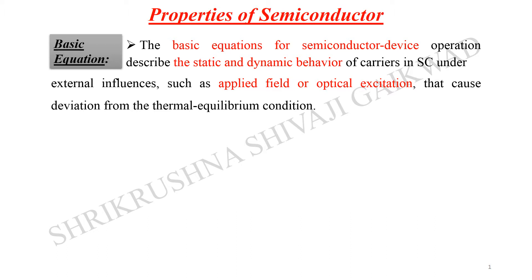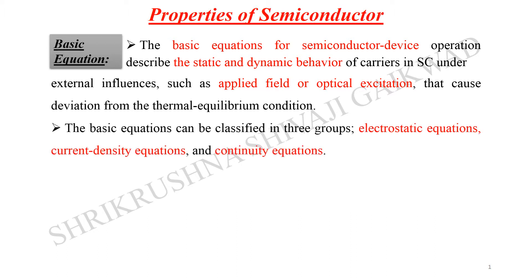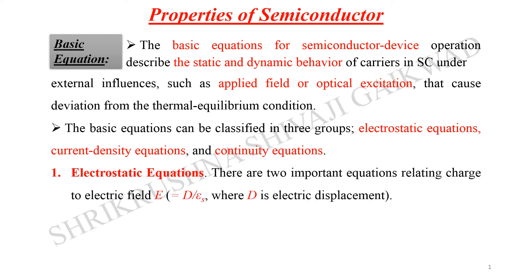The external influences include the electric field, magnetic field, or optical excitation, which cause deviation from thermal equilibrium conditions. Because of the application of external fields or optical excitation, the semiconductor deviates from its initial thermal equilibrium. These basic equations can be classified into three groups: electrostatic equations, current density equations, and continuity equations.